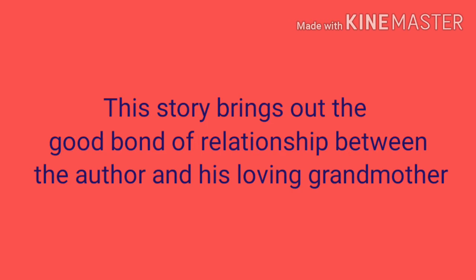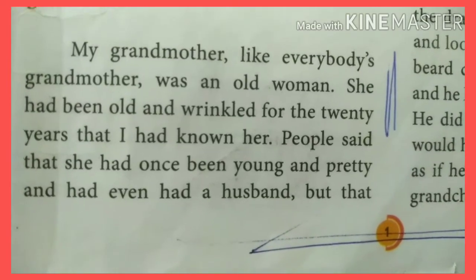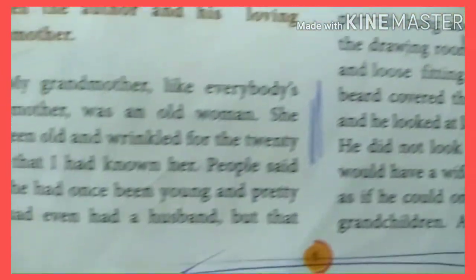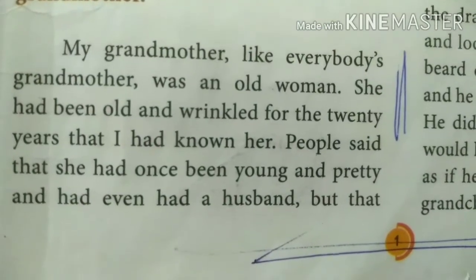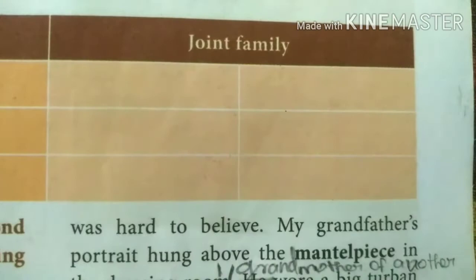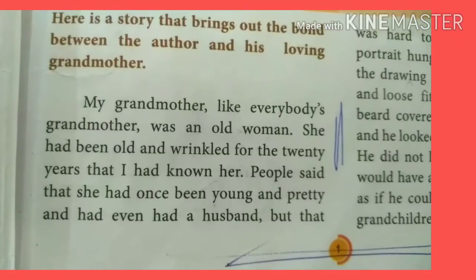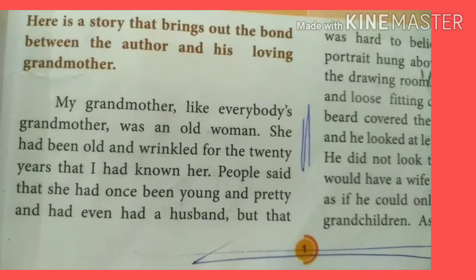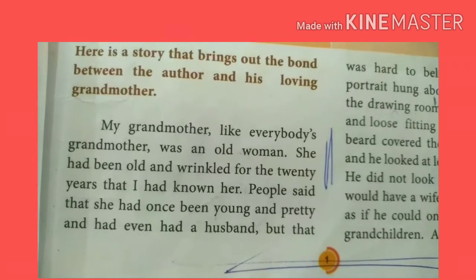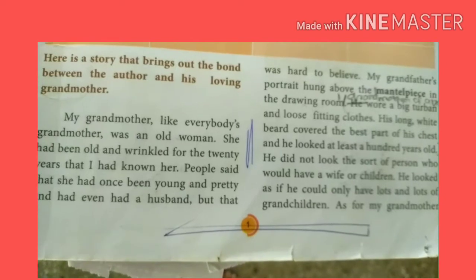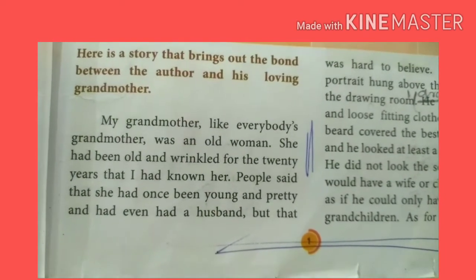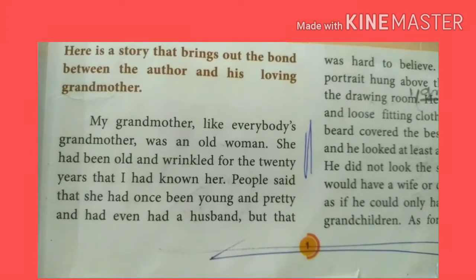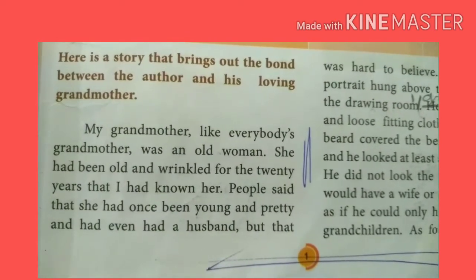There was a good relationship between the author Khushwant Singh and his grandmother. Here in the first paragraph, Khushwant Singh beautifully describes his grandmother. He says that like everybody's grandmother, his grandmother also was very old and wrinkled for the 20 years he had known her. He heard from his neighbors that his grandmother was once very young and pretty and she had a husband, which was unbelievable for him.